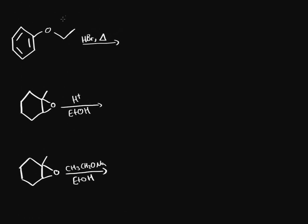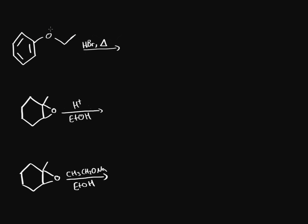For this first reaction, hydrobromic acid provides a proton, and the oxygen on the ether — with its lone pair — is going to be attracted to it and try to bond with it. When it does, we have three bonds on this oxygen, so we end up with a positive charge on this oxygen. That means one of the bonds that oxygen is attached to has to break, making it essentially a good leaving group.